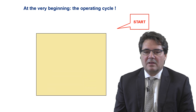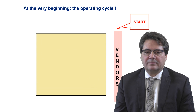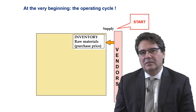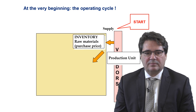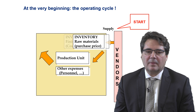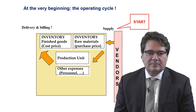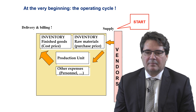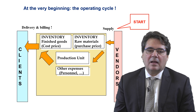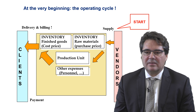We start with vendors. Vendors or suppliers supply raw materials, which are then processed into finished goods. The finished goods are delivered to clients, who are billed. They pay their bills, and the company can then pay its staff and its vendors.